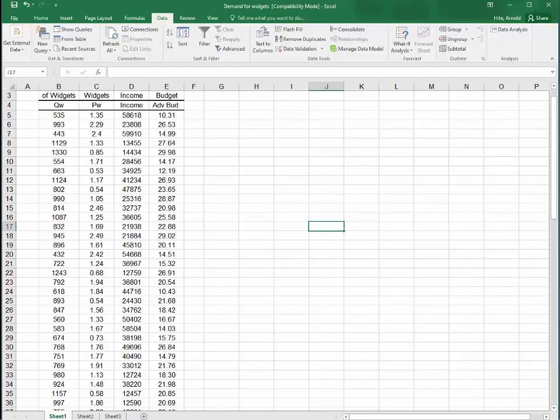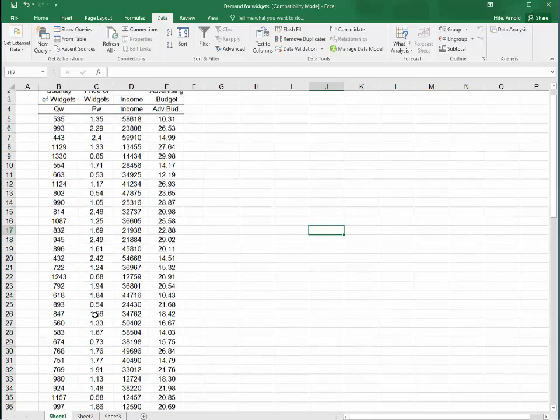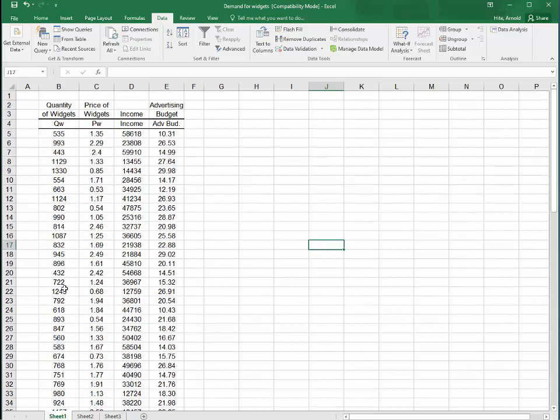What you see here is a data set from an old exam. You have here the quantity of widgets, the price of widgets that are connected to those sales, income at the time of those sales, and the advertising budget wherever those sales were made. What's not listed is where this data comes from. These could be different stores or different towns or maybe different time periods. But you just need data.